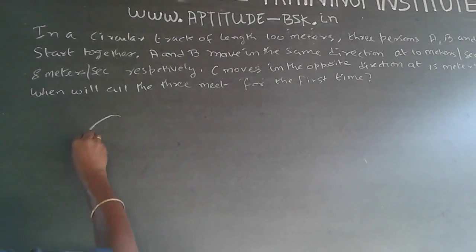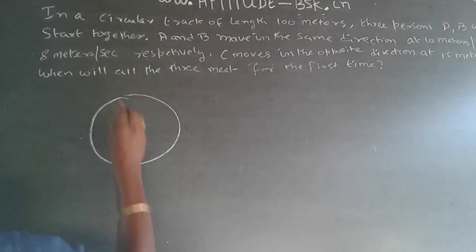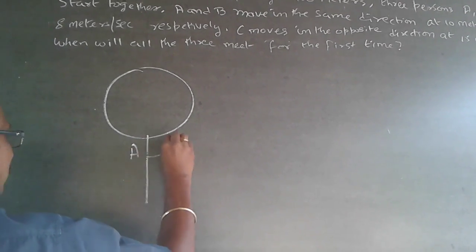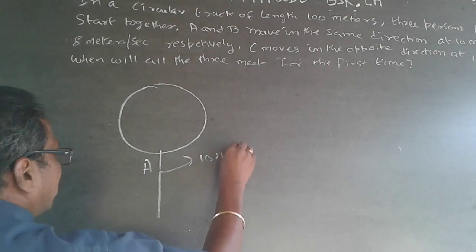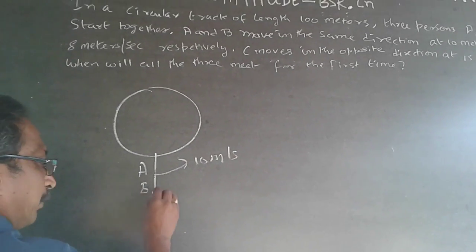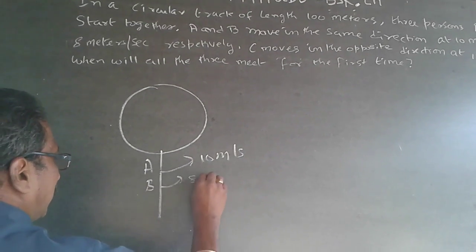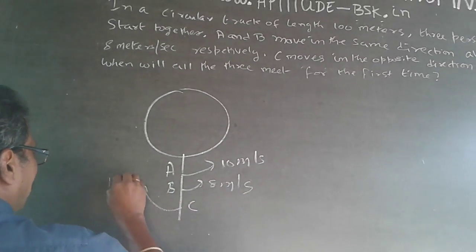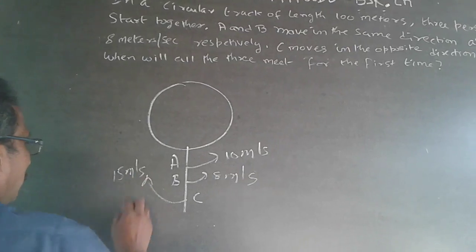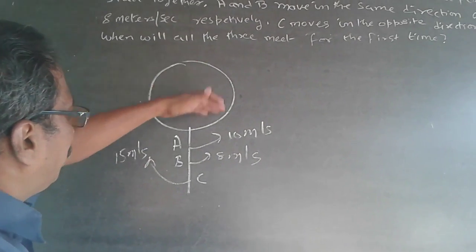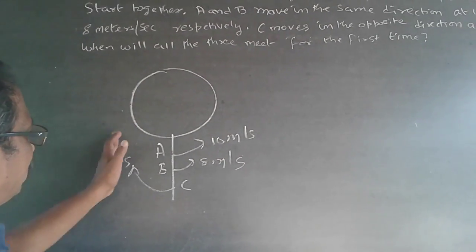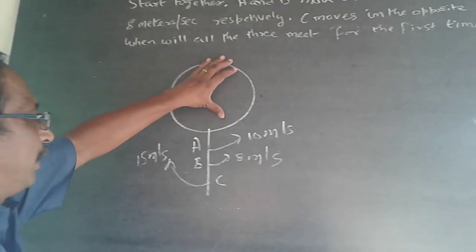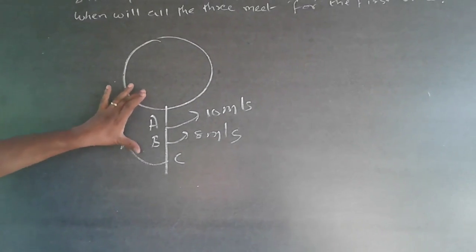So here we have a circular track like this. All three start from the same point. A is running in this direction at 10 meters per second. B is running in the same direction at 8 meters per second. And C is running in the opposite direction at 15 meters per second. Since C is running in the opposite direction, C will be meeting A and B alternately.